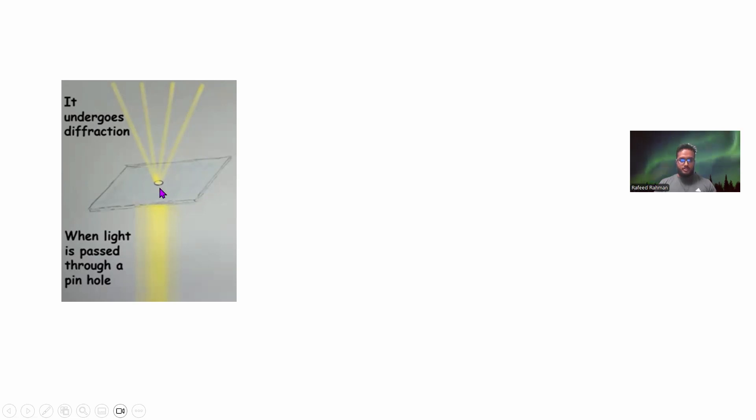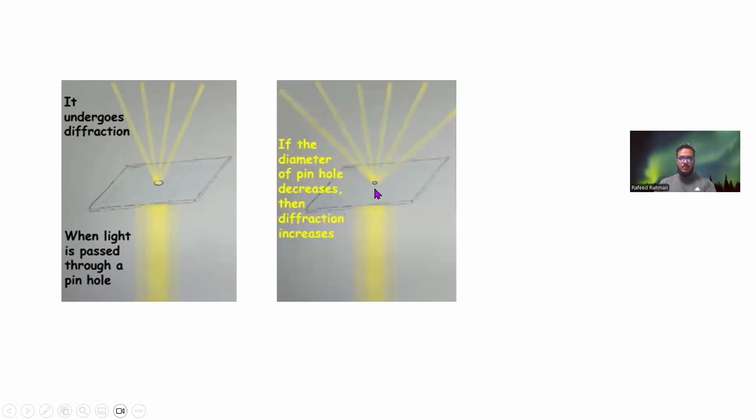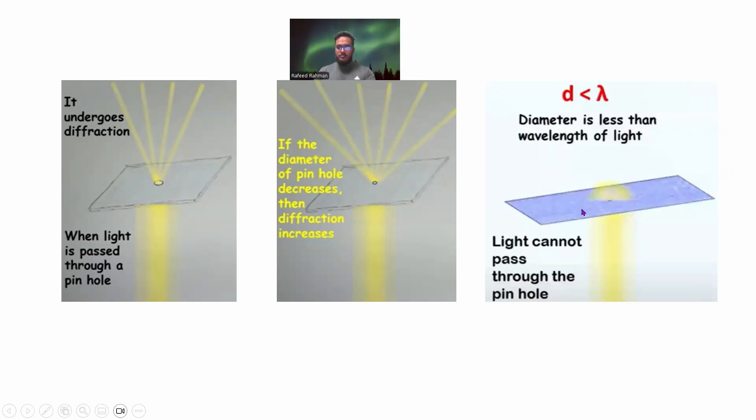Suppose this is a sheet and there is a small pinhole in the sheet. If you pass light here, the light will have some diffraction. If the pinhole is smaller, the diffraction will increase. Now if we decrease the pinhole to an extent where the pinhole is actually less than the wavelength of light, then light cannot pass through it. But it will disseminate its electromagnetic wave around this whole place. This phenomenon is called zero mode wave or ZMW guide.